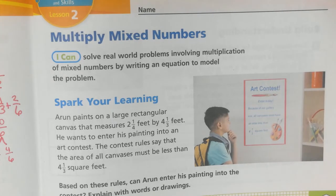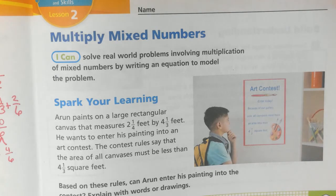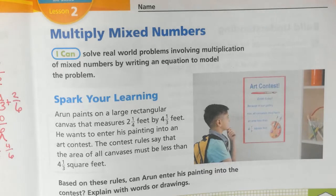Hi, 5th grade. Here's our second lesson for week number 31. We are going to be multiplying mixed numbers. Remember last time we worked on multiplying mixed numbers using the area model, and we're going to continue working on different strategies to multiply mixed numbers. So we're going to be able to solve real-world problems involving multiplication of mixed numbers by writing an equation to model the problem.